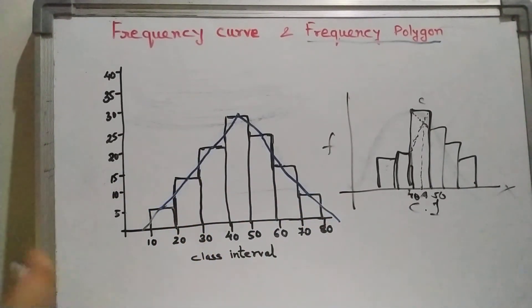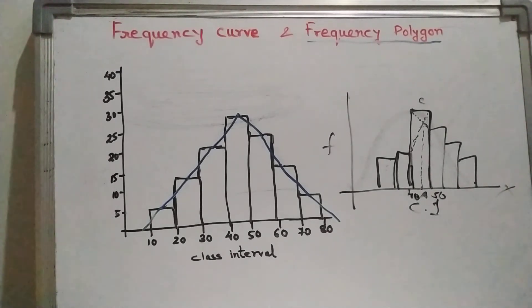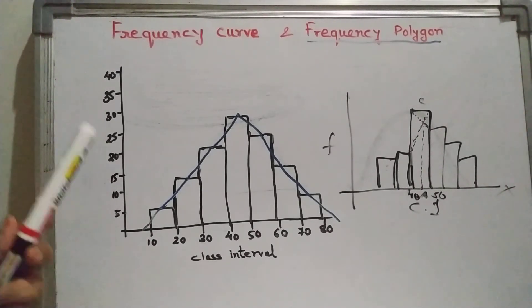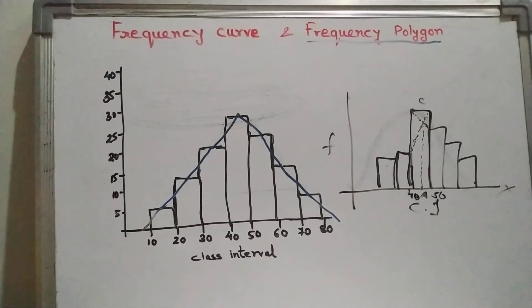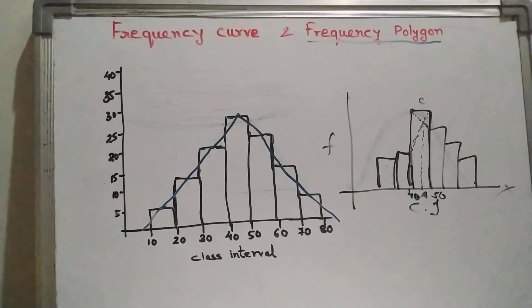So I hope you understand these three things: frequency curve, frequency polygon, and how to find mode graphically. Thank you.